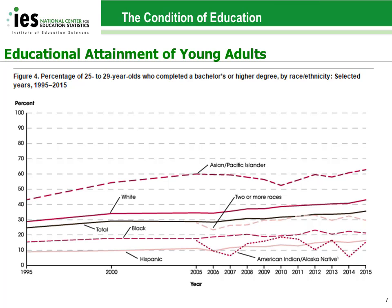Generally, all groups are making gains, but attainment for the combined Asian and Pacific Islander group remains consistently higher than attainment for other racial and ethnic groups. The attainment for American Indian and Alaska Natives shows more variability over time than that for most other groups. This is due in part to the small sample sizes for this group, leading to a larger margin of error in the estimates.